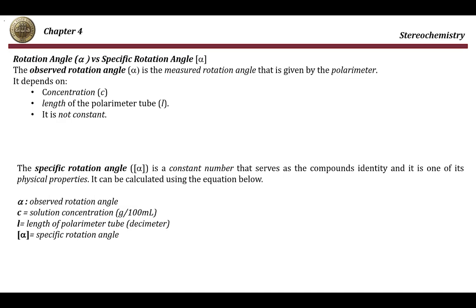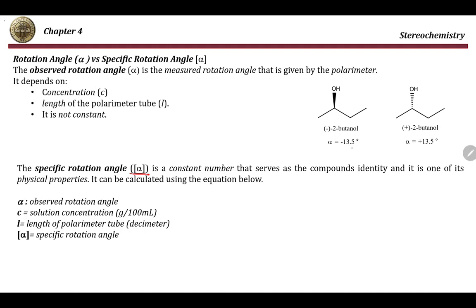If you have a concentrated solution of 2-butanol it gives you one number; a diluted solution gives another. Using a different polarimeter on the same sample can also give different numbers. To use rotation data to identify compounds, we need the specific rotation angle, written in brackets, which is a constant number. For example, the specific rotation angle of 2-butanol is always 13.5 regardless of the polarimeter or concentration used, so it serves as an identity for the compound.